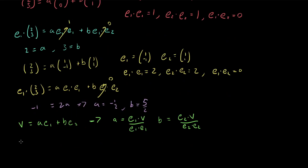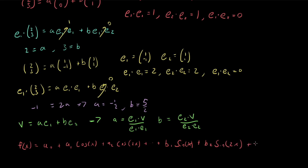But how does this connect to Fourier series? Well, the idea is that the left-hand side — the vector — is our function that we're trying to expand, and the right-hand side is the Fourier series itself with the basis vectors. For Fourier series, that expansion is: a constant plus A1 cos(x) + A2 cos(2x) + more cosine terms + B1 sin(x) + B2 sin(2x) + more sine terms. We want to solve for all these coefficients A1, A2, B1, B2, and the basis functions are the sines and cosines.